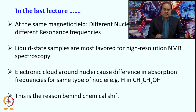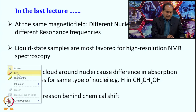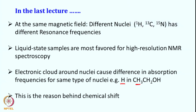We looked at how the electronic cloud around the nuclei causes a difference in absorption frequency for the same type of nuclei. For example, a proton in CH3 has a different electronic cloud than in CH2 or OH. Therefore, for an alcohol we have three peaks — one corresponding to CH3, one to CH2, and one to OH — and their intensity ratio is 3 to 2 to 1.